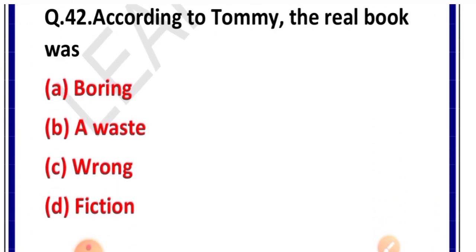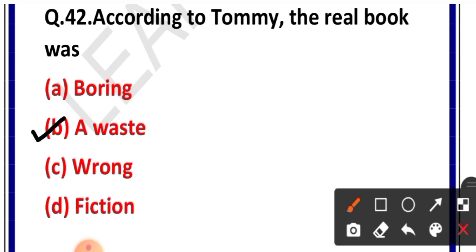Question number 42: According to Tommy, the real book was — options: boring, or waste, wrong, or fiction. Correct answer is option B — waste. Tommy ne kaha tha ki jo real book hoti hai, woh pages ki waster hoti hai.